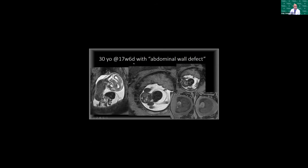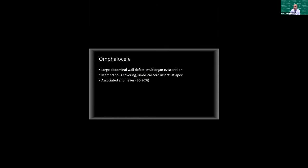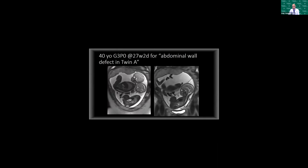Another case of an abdominal wall defect, imaged very early at 17 weeks: all abdominal contents are externalized. We can see the liver externalized, and on T1 weighted images we can show that the liver — bright on T1 — is external to the fetal abdomen, along with meconium-containing bowel loops externalized as well. This is a classic case of an omphalocele, moving up in the degrees of severity of abdominal wall defects.